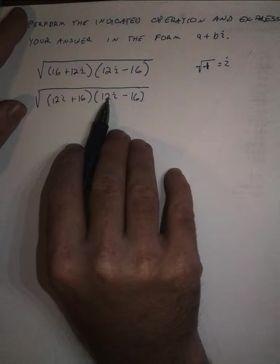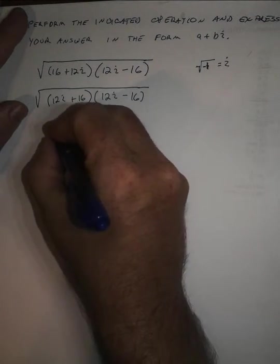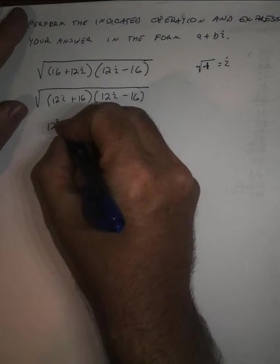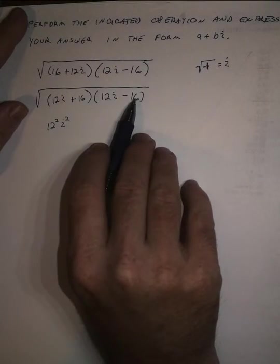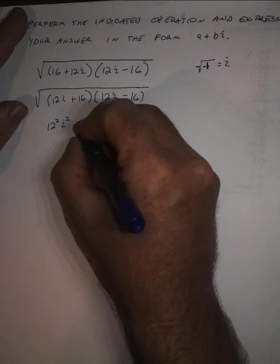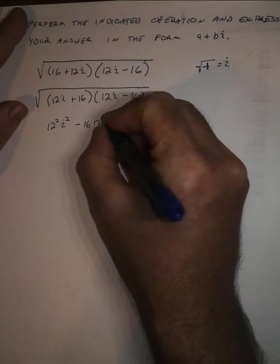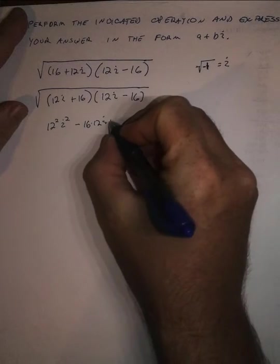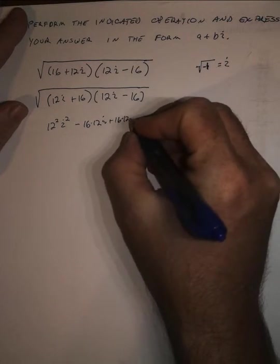but I'm just going to FOIL this thing out and see what we get. So the first two terms is 12 squared i squared. The outer terms, because these are conjugates, this is going to be minus 16 times 12i, and then this is going to be plus 16 times 12i.